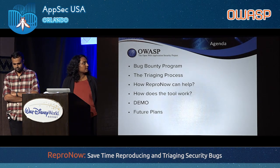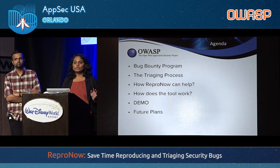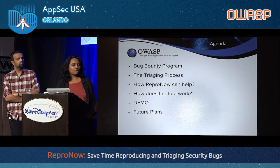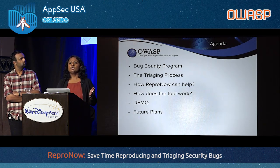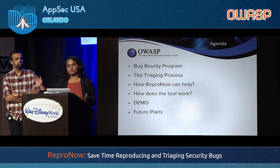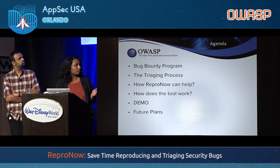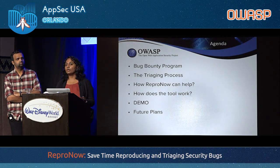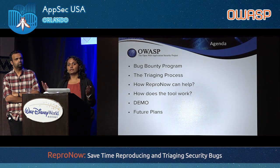The agenda for today: we're going to start with a basic understanding of the bug bounty program, then walk you through the triaging process — how much effort it takes for a security engineer to take a submitted bug, verify it's valid, triage it, create an internal ticket, and resolve it. Then we'll walk through how ReproNow helps, how we built the tool, and if the demo gods are kind to us, a successful demo. We'll also discuss future plans and how results can be fed into other tools.